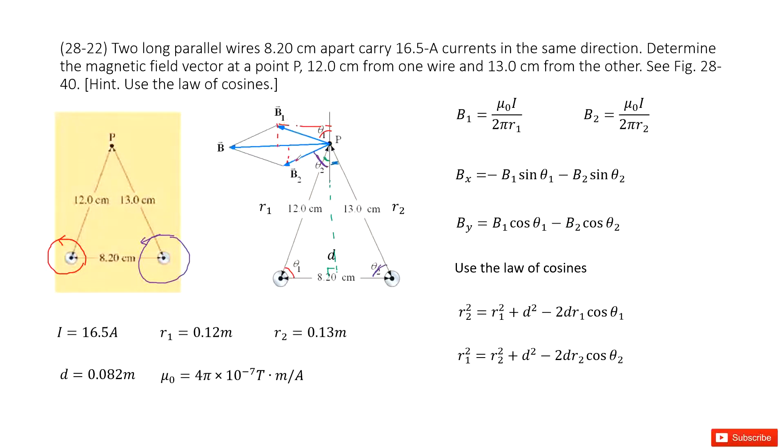So we project B1 and B2 in x and y components. So we can get the net magnetic field in x and y components in these two equations. Right?